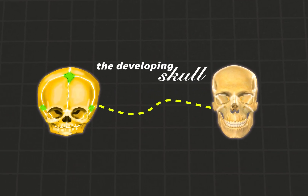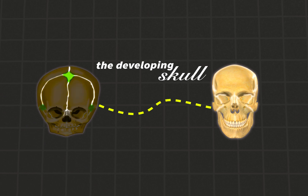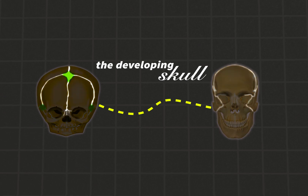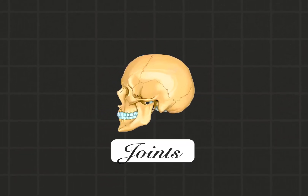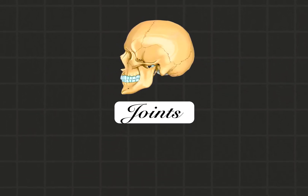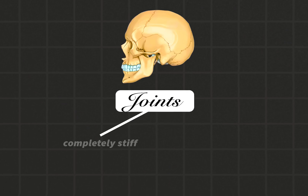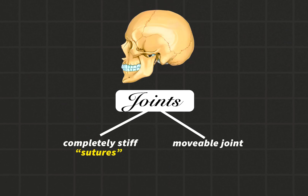As the child grows, those gaps slowly close, and the skull begins to form joints. Most of these joints become completely stiff, called sutures. Others become a movable joint that allows the jaw to move freely.